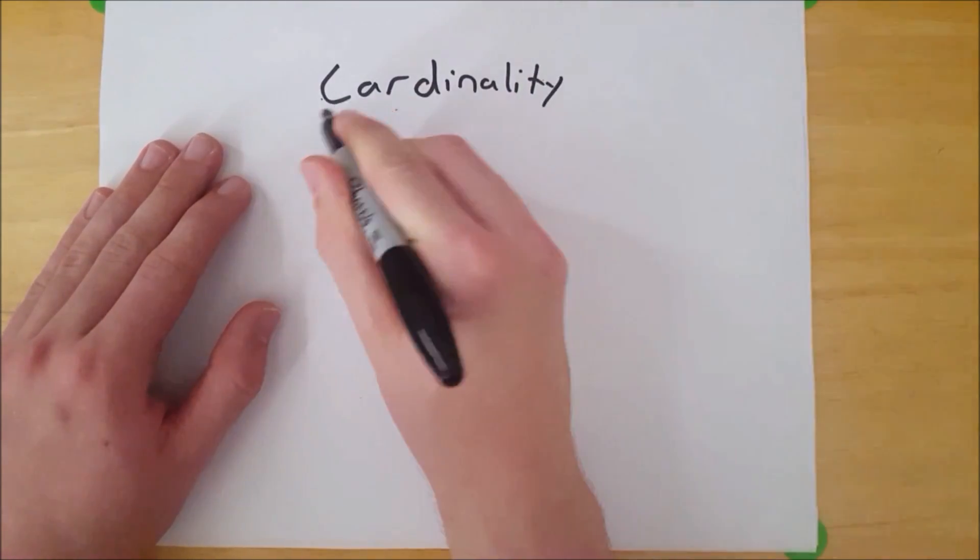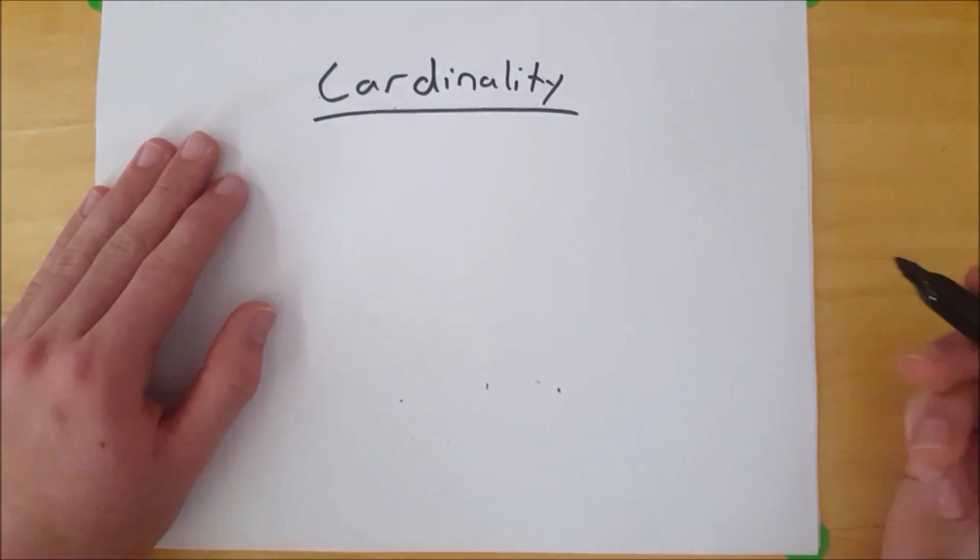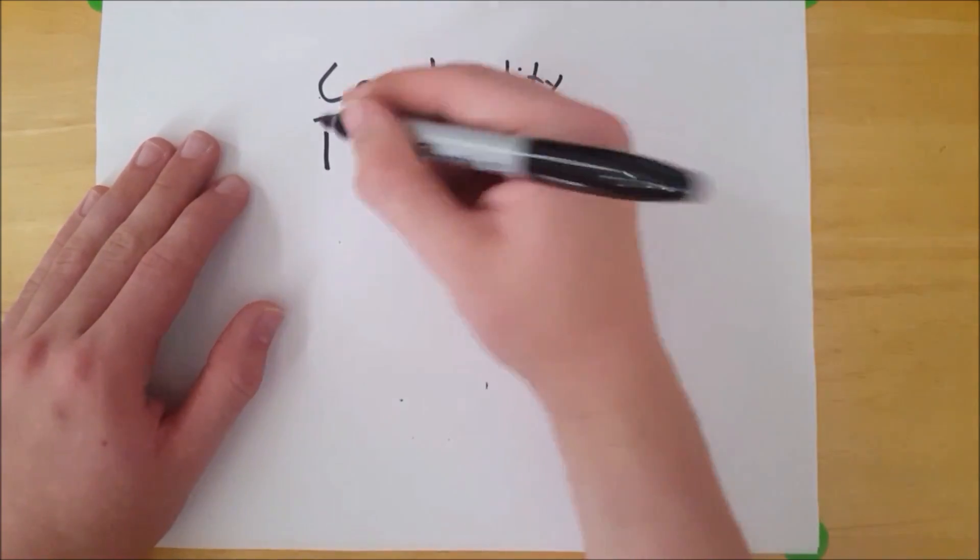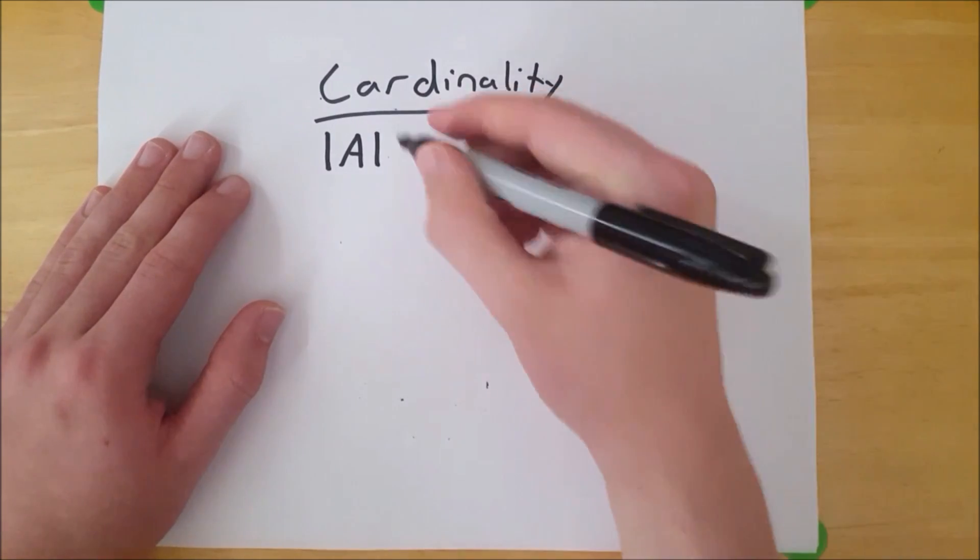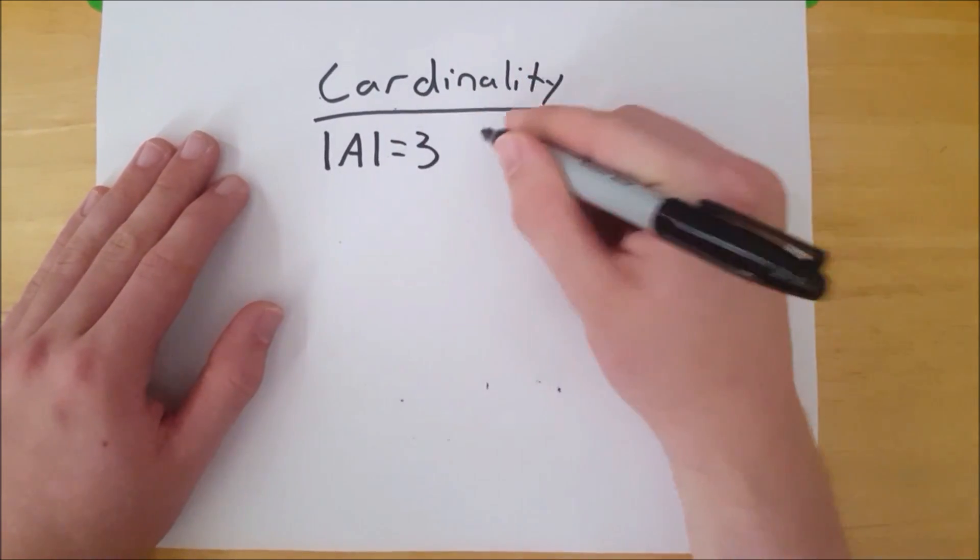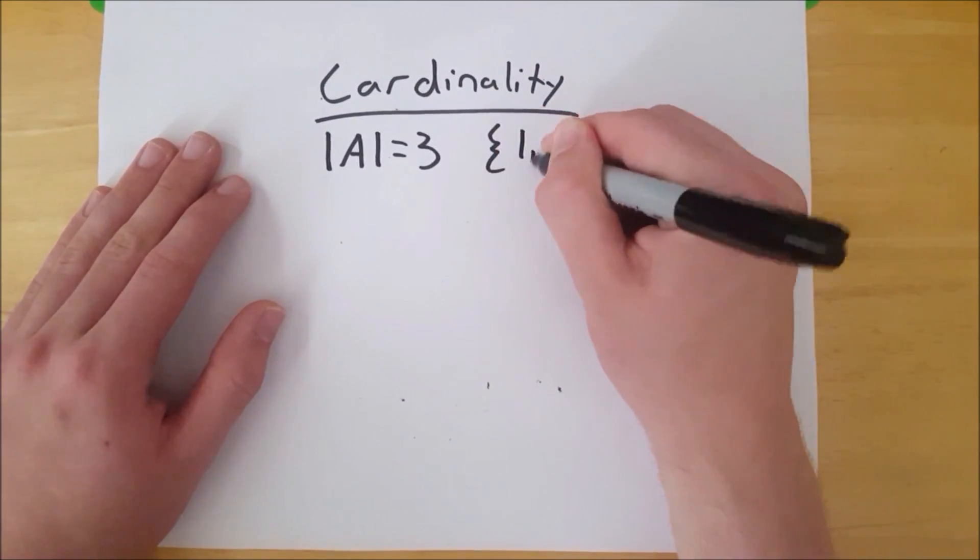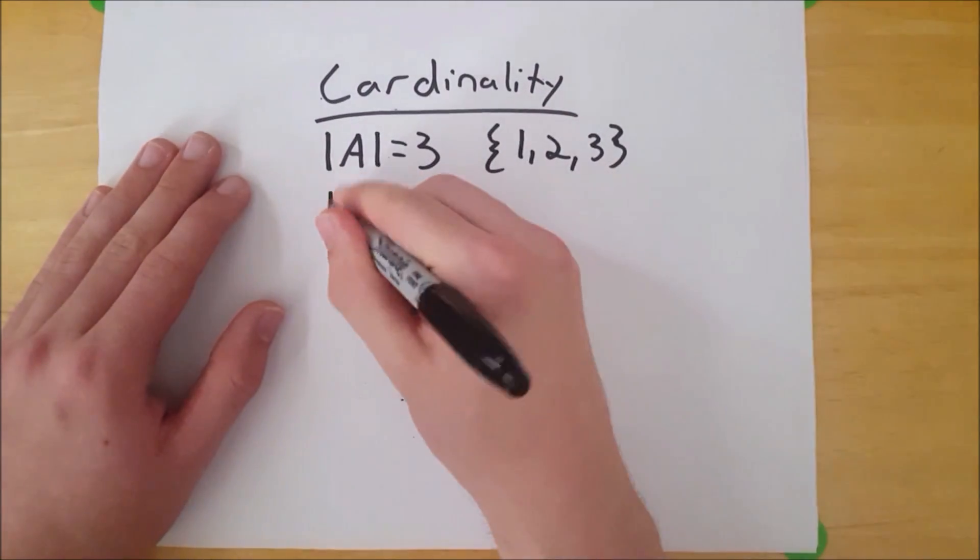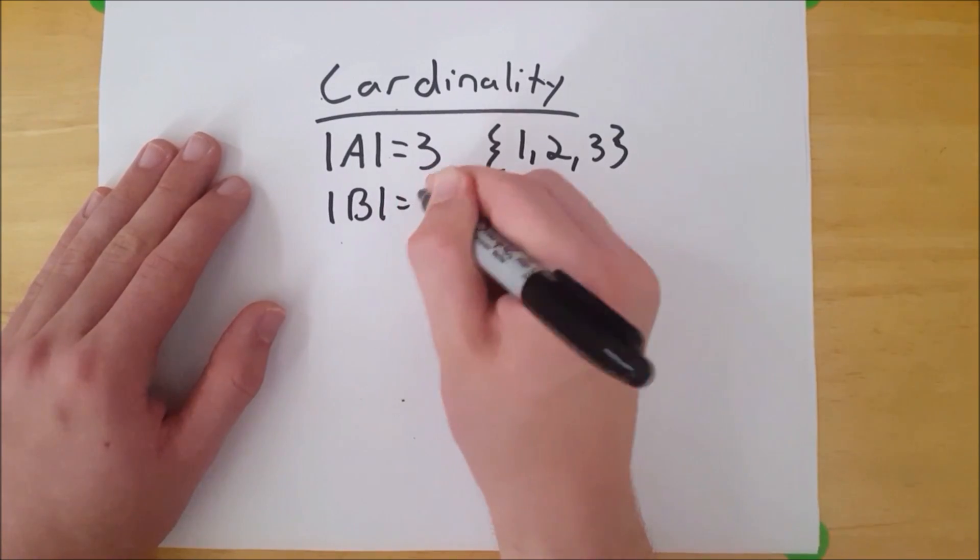Cardinality is the number of elements that are in a set. And to write that, you use absolute value symbols, basically. So the cardinality of A is equal to three, because A has one, two, and three in it.